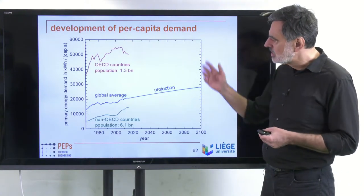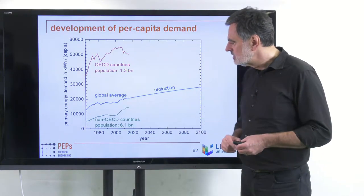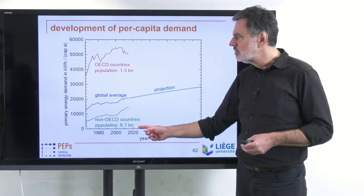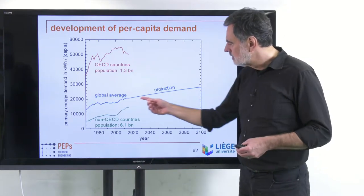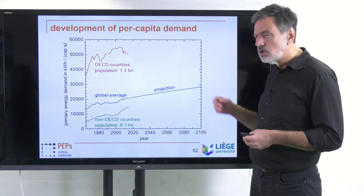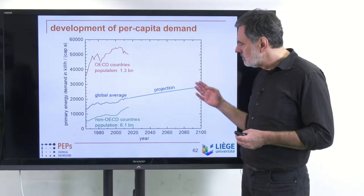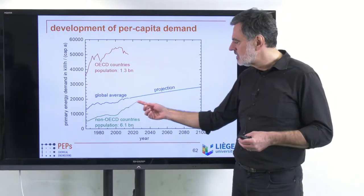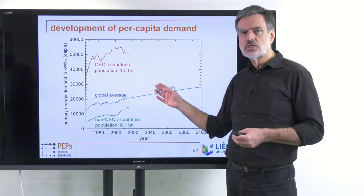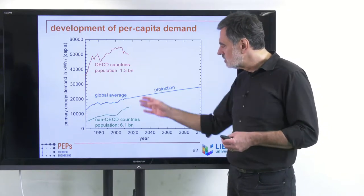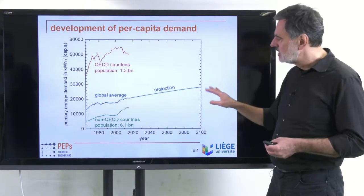This next slide shows the averages developing over time: the global average, the non-OECD countries contributing 6.1 billion people, and the OECD countries contributing 1.3 billion people. My overall projection going into the future is almost 30,000 kilowatt-hours per capita per year by end of century. This takes into account that less developed countries are increasing their per capita energy consumption, while developed countries need to significantly reduce theirs, leading to convergence.